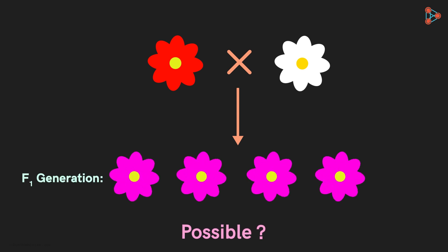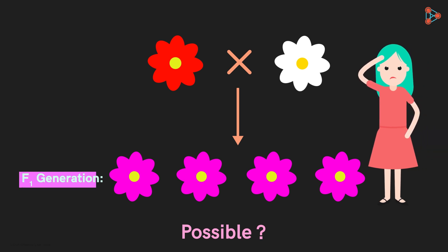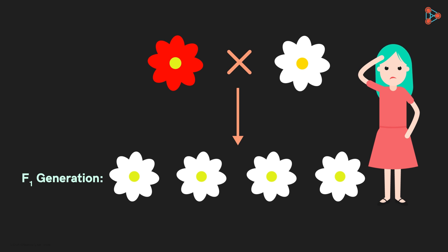At the first instance, you may say NO! Most of us would think that the plants in the F1 generation can either be red or white depending upon the dominant trait!